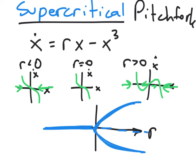So that's our bifurcation diagram. Someone is dialing a knob that changes r, and we're puttering along with the origin being perfectly stable. Then suddenly we get to the bifurcation value, and our fixed point is no longer stable. If we experience even the tiniest perturbation, we're going to go flying upwards or downwards. Before the bifurcation we were stable, and now it looks like this.